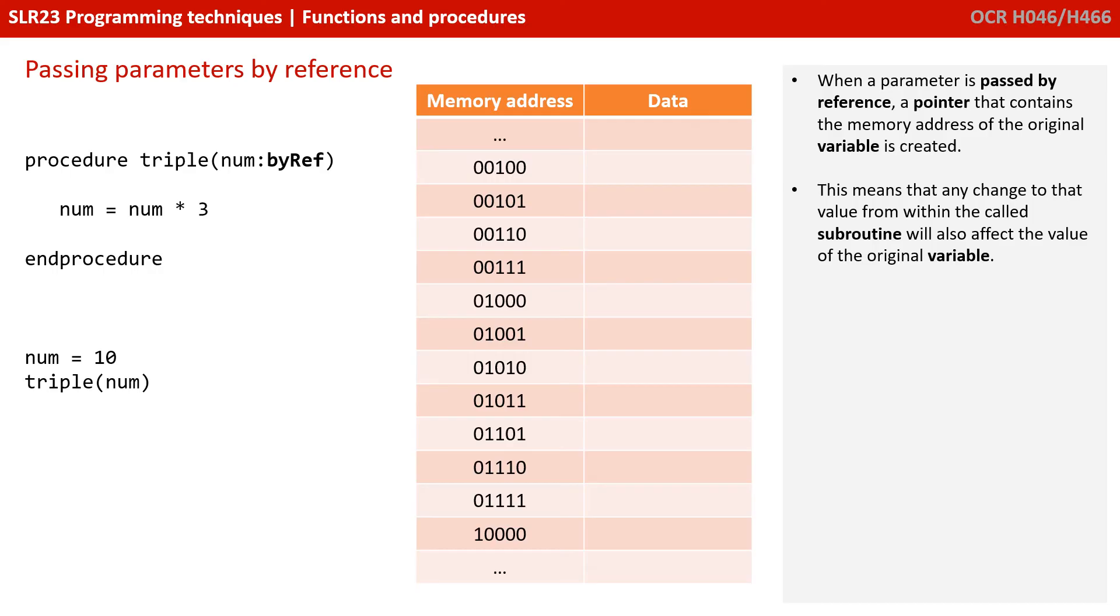When a parameter is passed by reference, a pointer that contains the memory address of the original variable is created. This means that any change to that value from within the called function will also affect the value of the original variable.